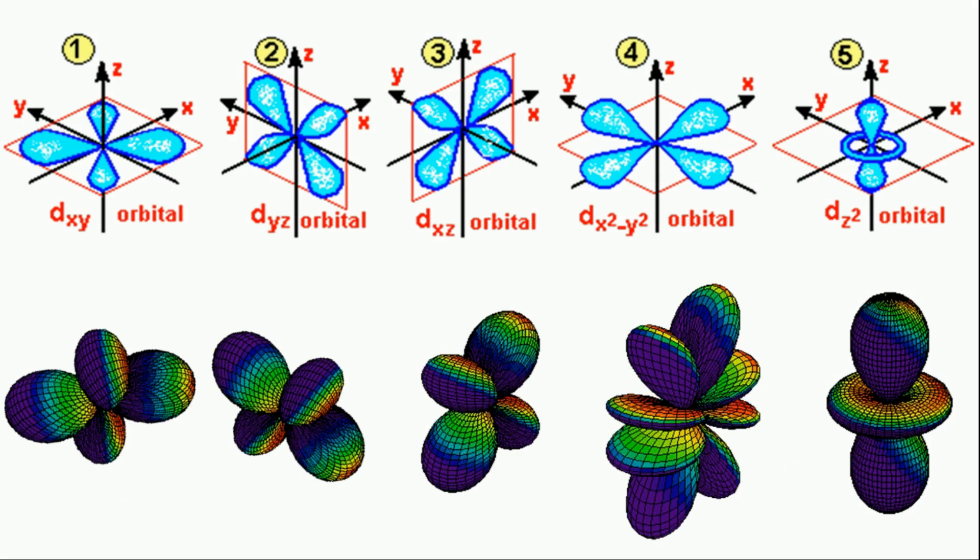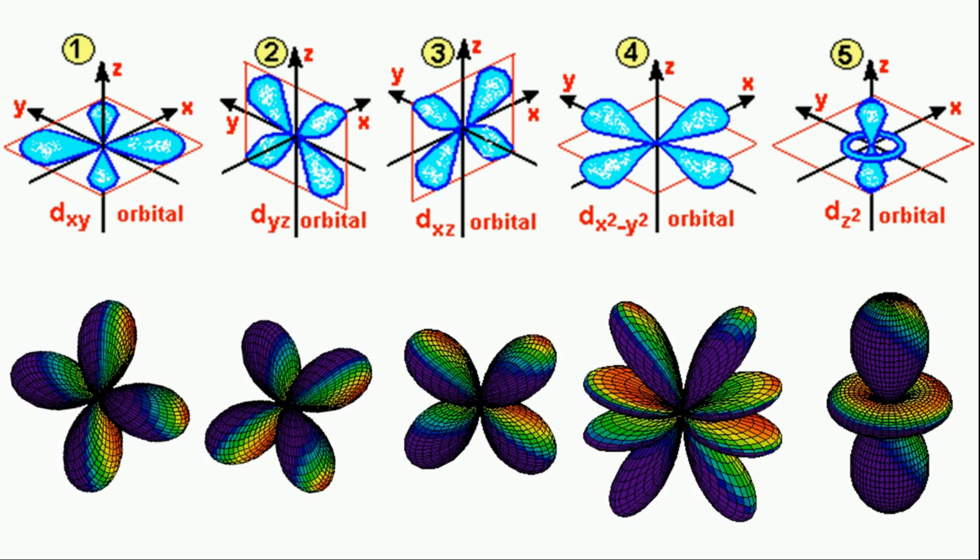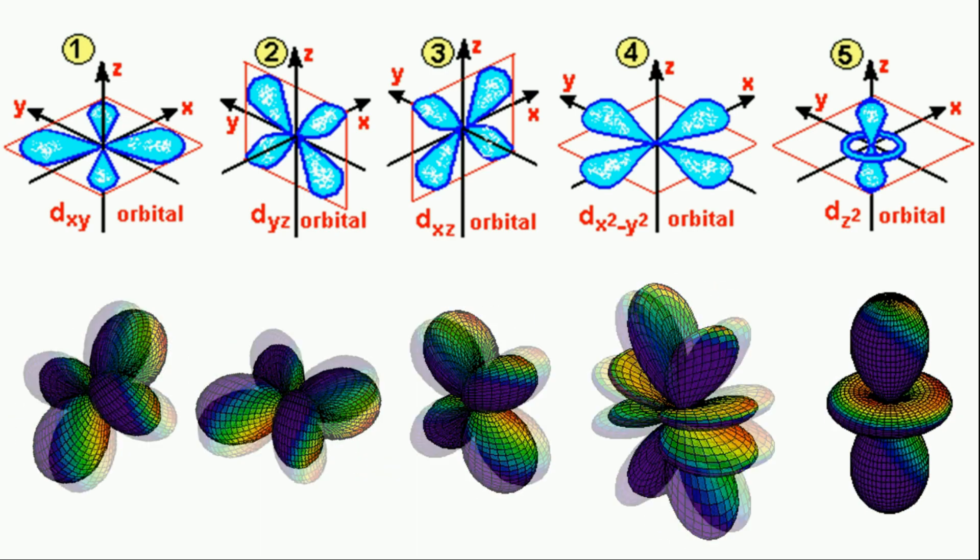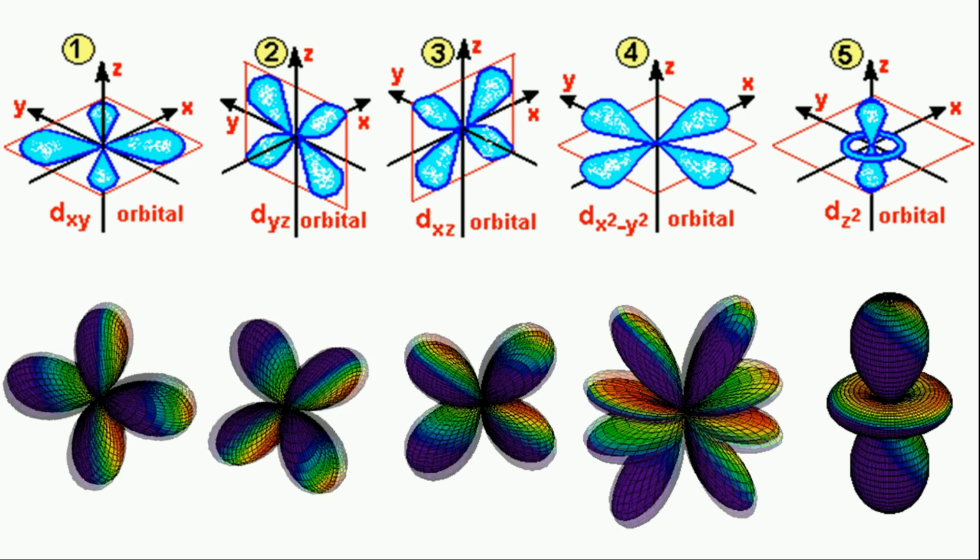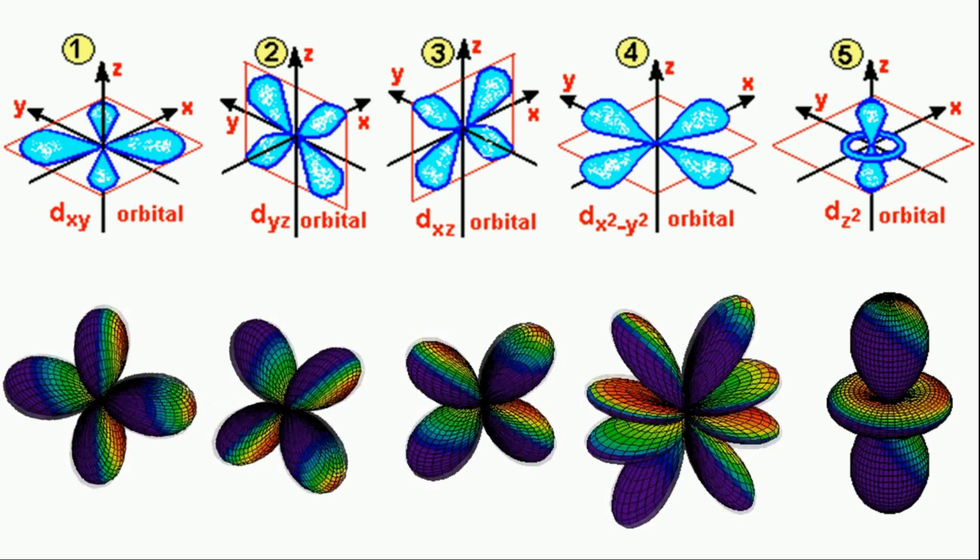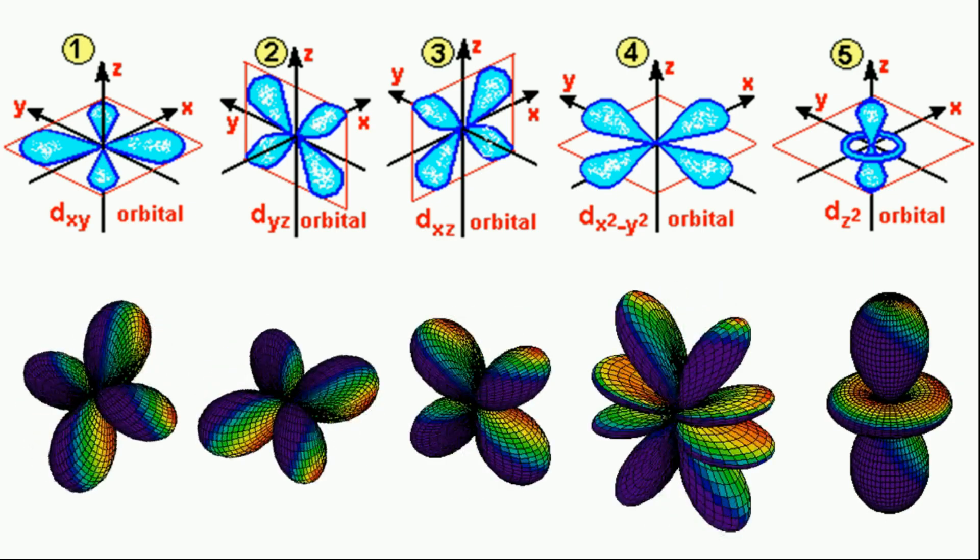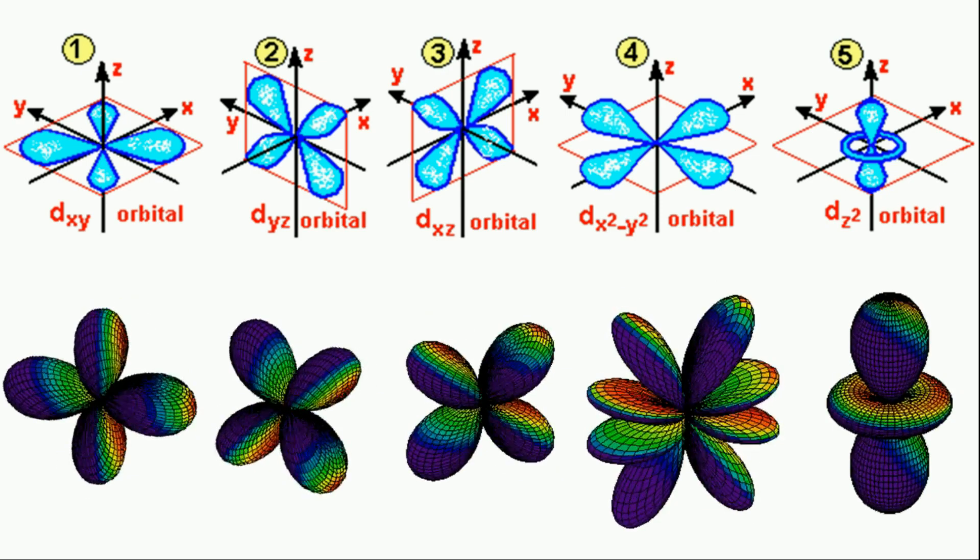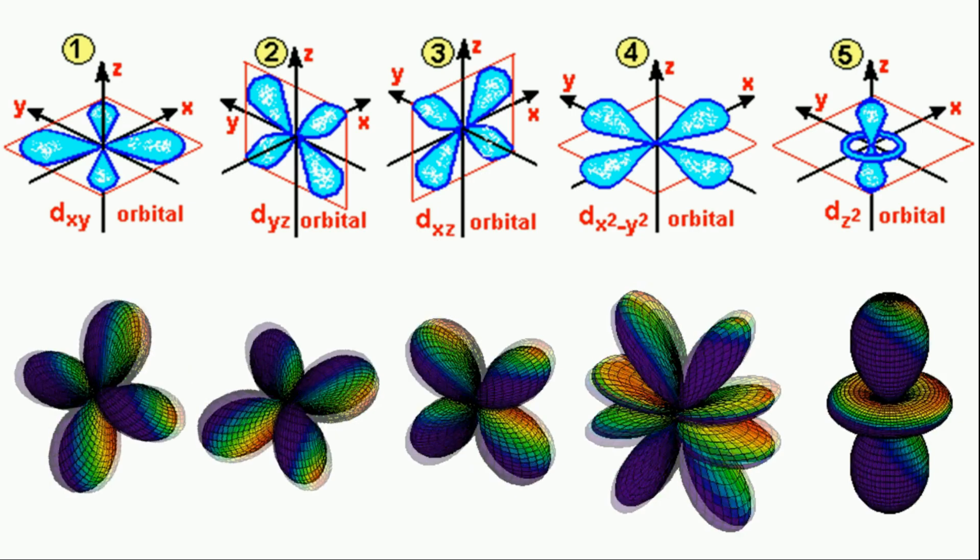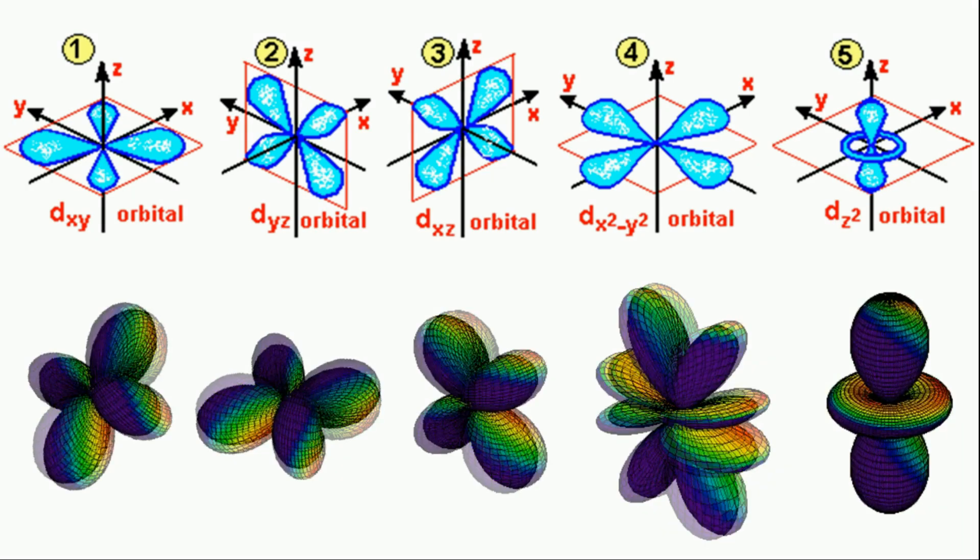The orbitals are classified into five types: dxy orbital, dyz, dxz, dx square minus y square, and dz square. The names tell you that these orbitals lie in the xy plane, xy plane and yz plane respectively. Each orbital has four loops. Notice that each of the loops is pointing between two of the axes, not along them.